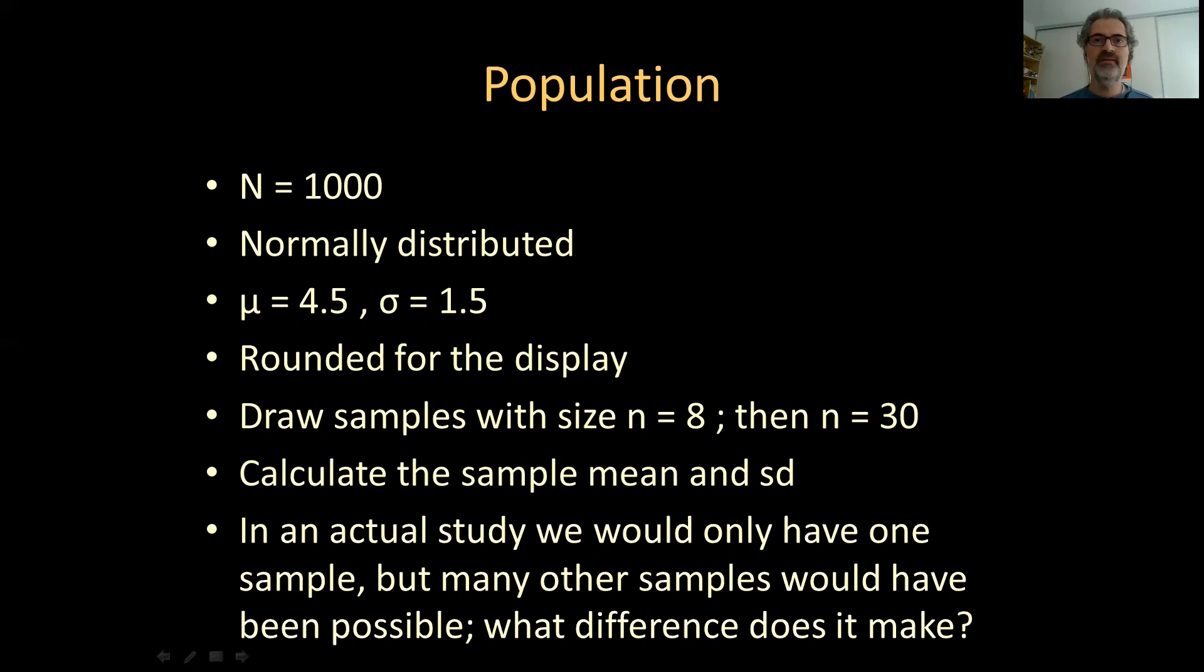But in every real study, other samples would have been possible. We could have picked other individuals. Now the important question here is, what difference does it make? How different could my results be if I had chosen a different sample, a different subset of the population? This is what sampling distributions help us understand.